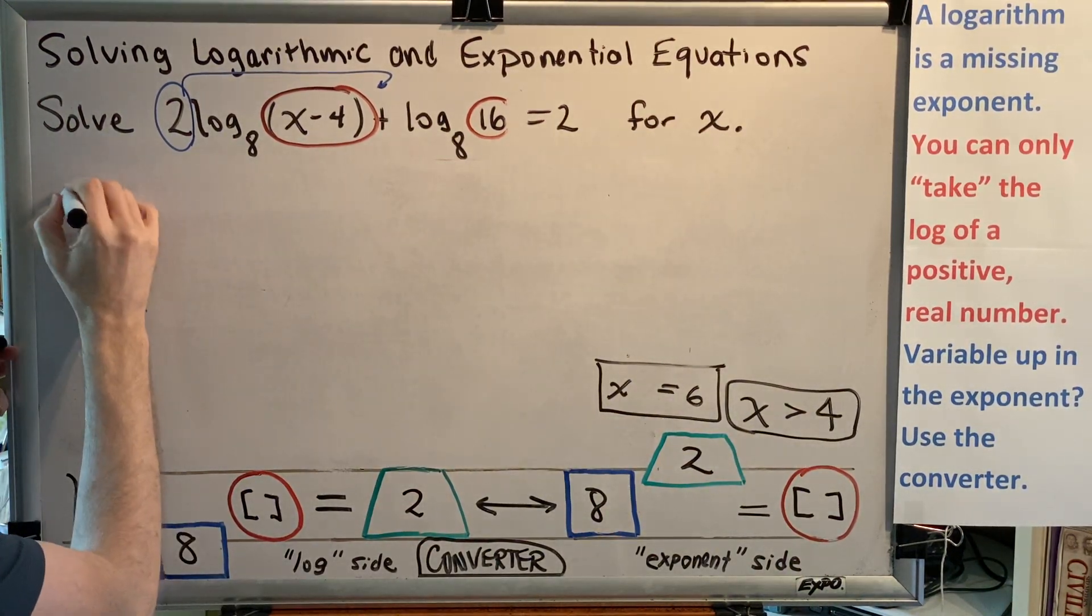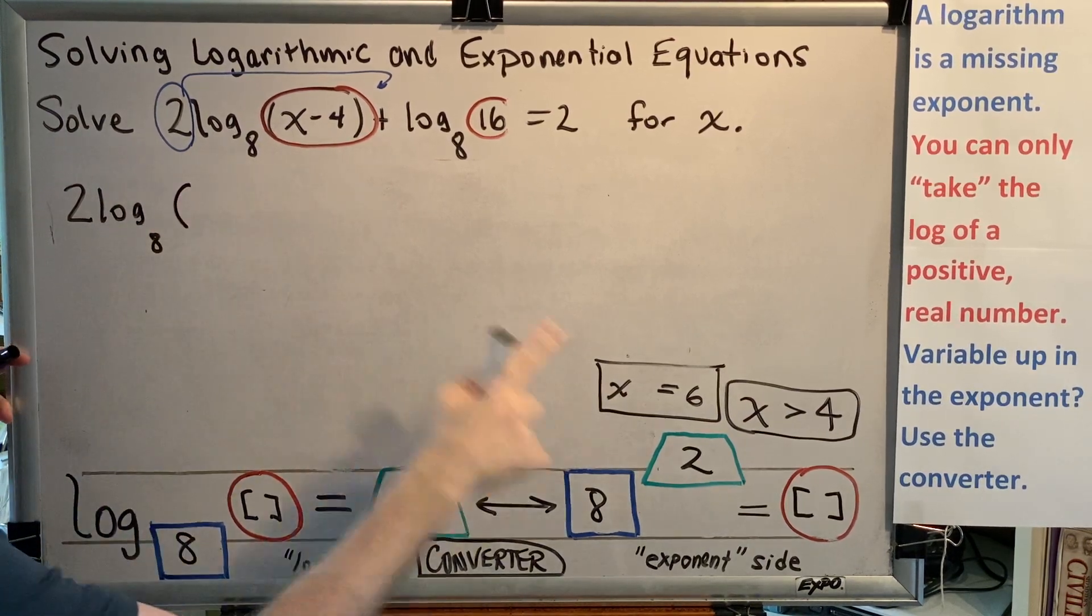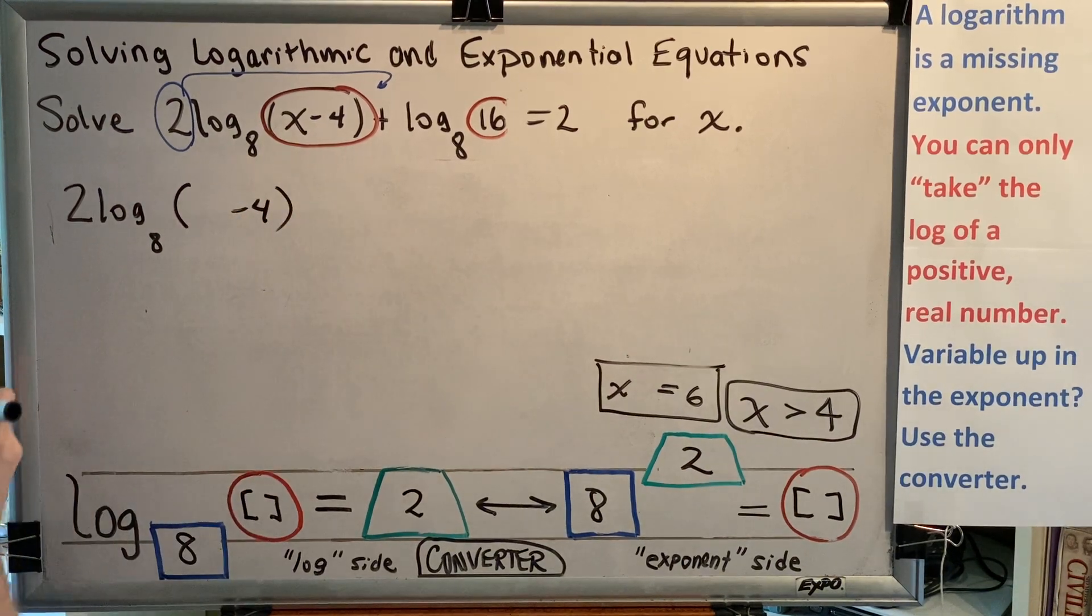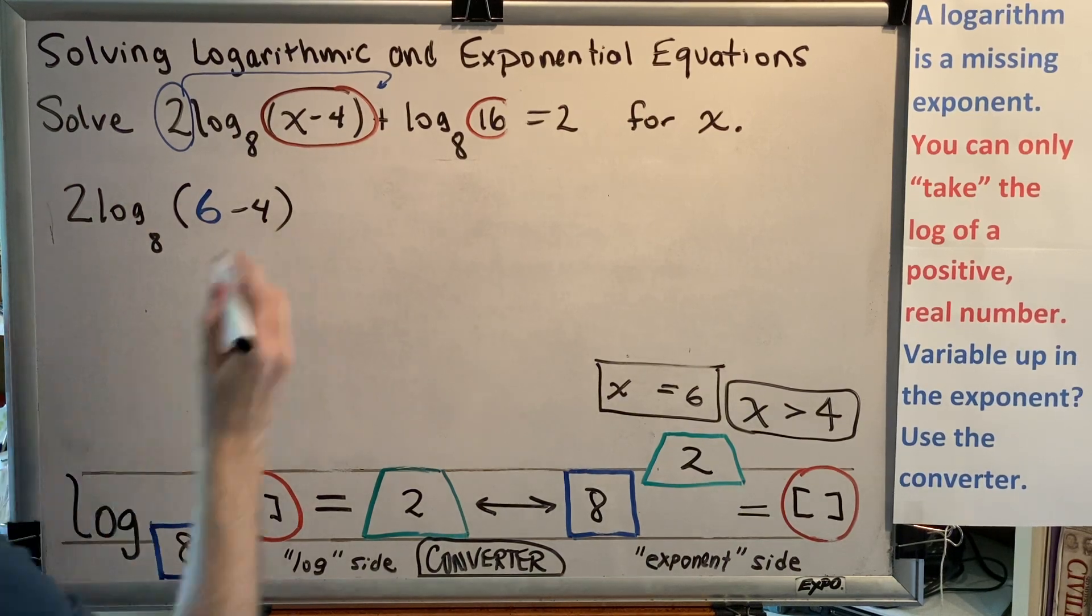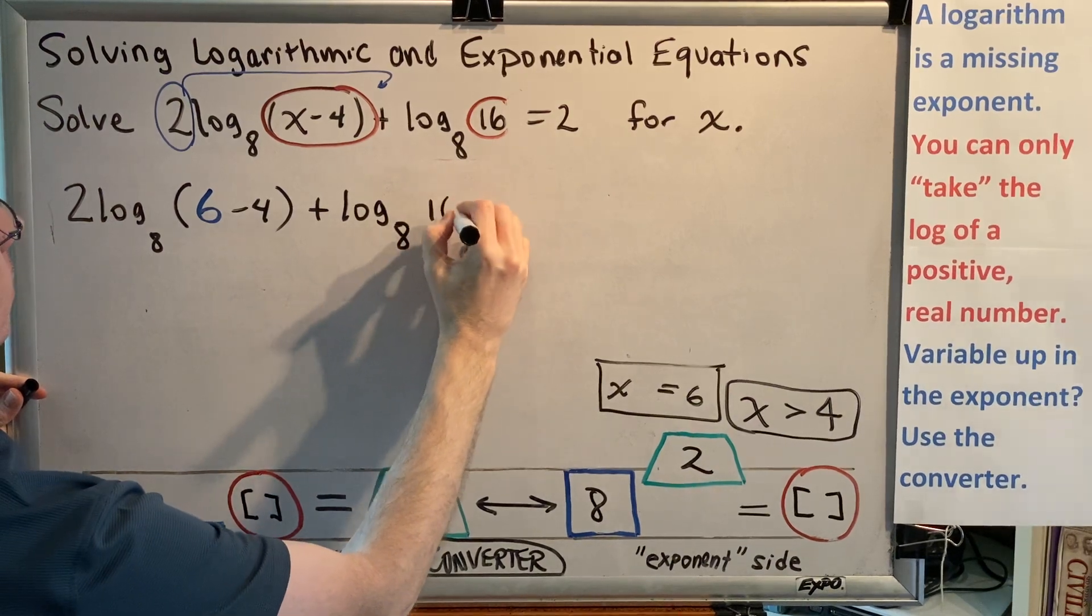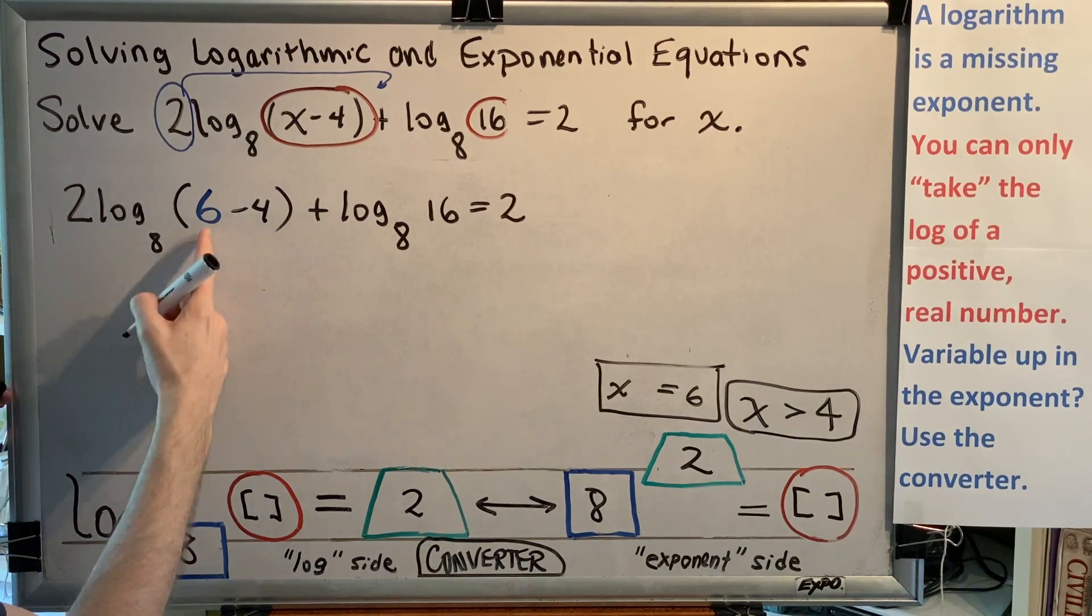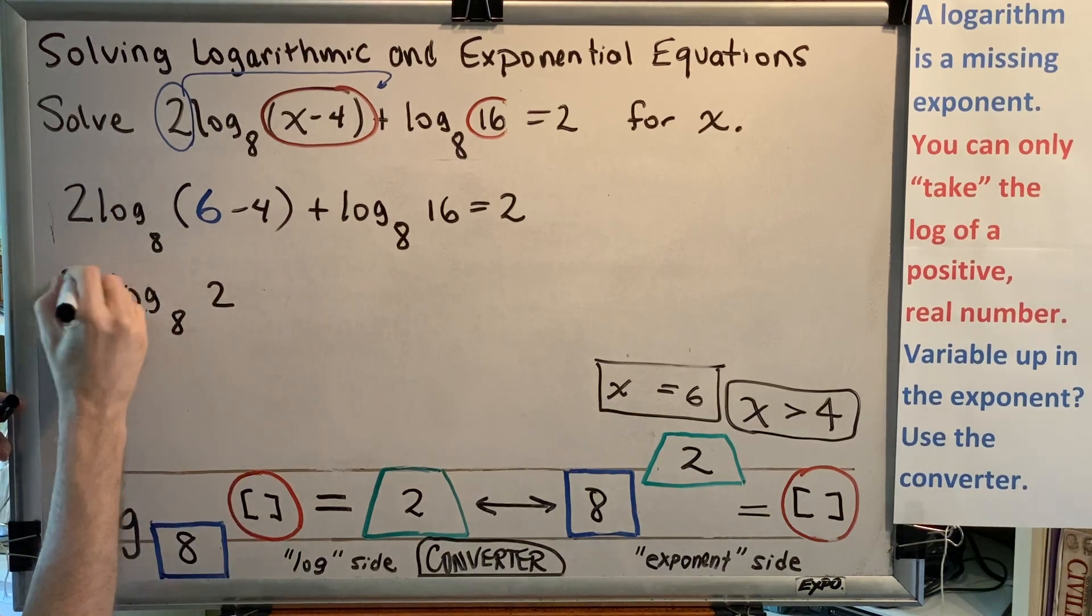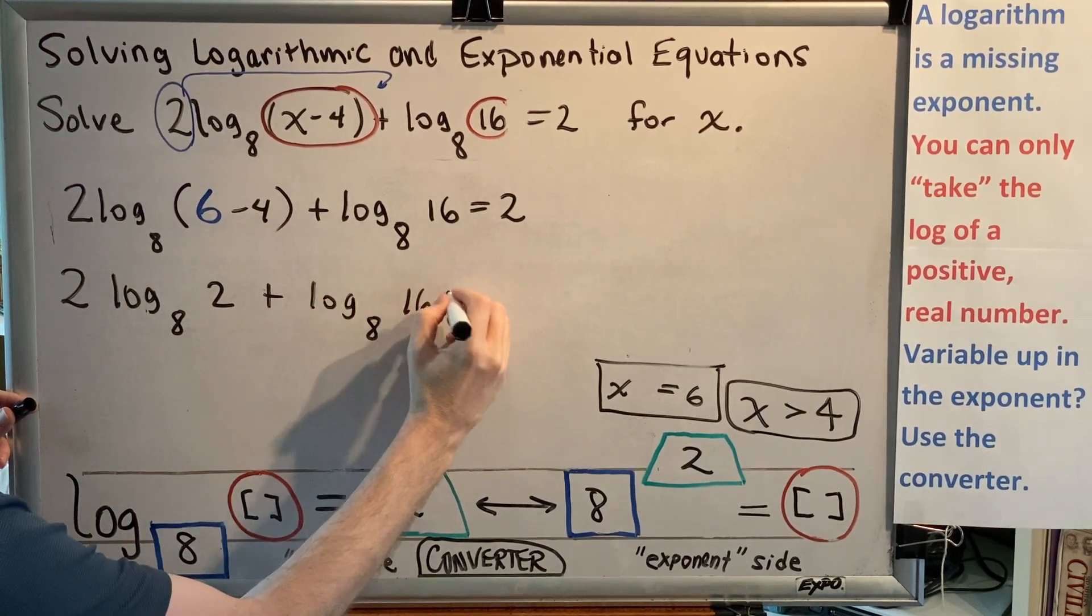Okay, here we go. Checking our answer. So we've got 2 log base 8 of x, which we found to be 6. So we're going to write 6 minus 4 plus log base 8 of 16 equals 2. All right, let's start simplifying. 6 minus 4 is 2. So we get log base 8 of 2. We still have this 2 in front of it. Plus log base 8 of 16 equals 2.